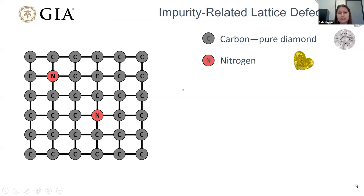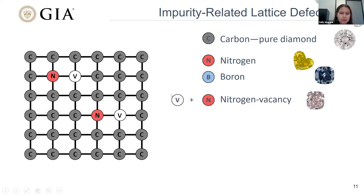Instead of nitrogen, if we swap in boron — in a diamond grown very deep in the earth, about 600 kilometers deep — instead of a yellow color, we have a very deep blue. We can also combine defects: a vacancy can create a green diamond, and nitrogen can create a yellow, but put them together you get something else entirely — a pink color. These nitrogen vacancy centers are very rare in natural diamonds, but are the dominant cause of color in treated pink diamonds, both earth-grown and lab-grown stones that have been subsequently treated.